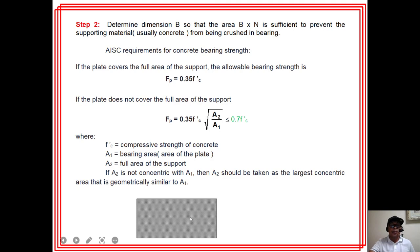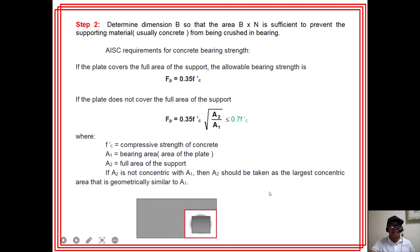If A2 (the concrete support area) is not concentric with A1, then A2 should be taken as the largest concentric area that is geometrically similar to A1. For example, if the base plate A1 does not fully cover the concrete support, A2 is drawn as a similar geometric figure — the largest possible — centered on A1.